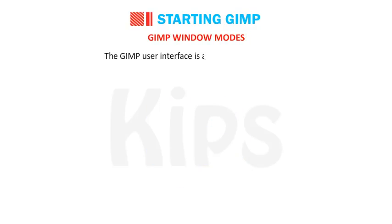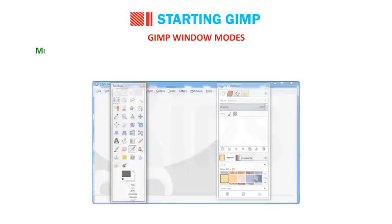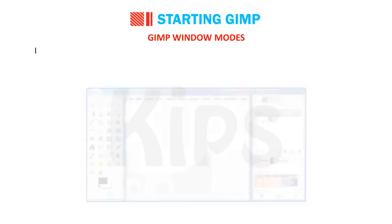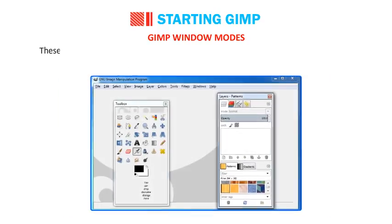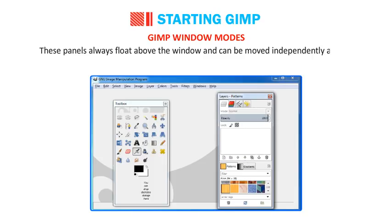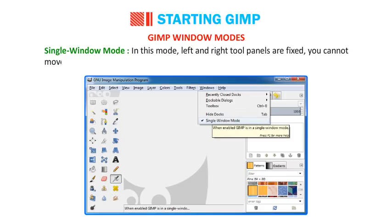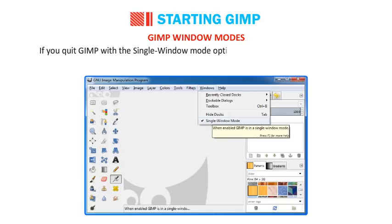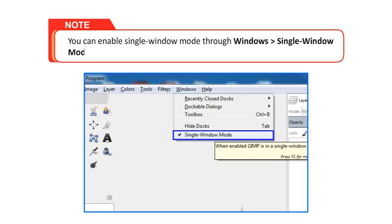The GIMP user interface is available in two modes: Multi Window Mode and Single Window Mode. In Multi Window Mode, when you open GIMP for the first time, the left and right tool panels are located separately on the screen and an image window is present in the middle. These panels float above the window and can be moved independently. In Single Window Mode, the left and right tool panels are fixed and cannot be moved, but you can decrease or increase their width. If you quit GIMP with the single window mode option enabled, GIMP will always start in single window mode next time. You can enable single window mode through Windows, then Single Window Mode in the menu bar.